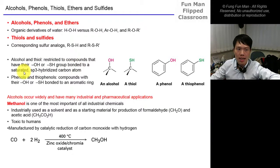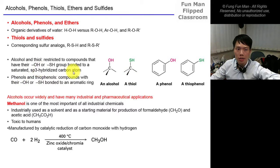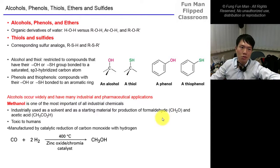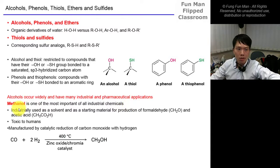The drawing represents alcohol and thiol as such. For phenol and thiophenol, the compound must have the OH or SH group bonded to a phenol ring, or aromatic ring. Alcohol occurs widely — they are omnipresent, with many industrial uses and of course pharmaceutical applications. Methanol is one of the most important industrial chemicals.